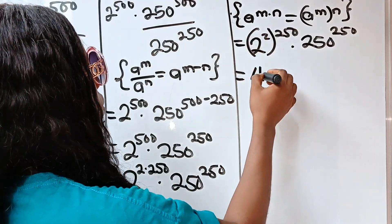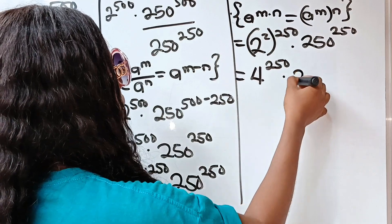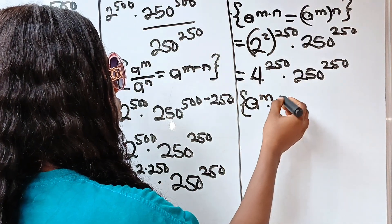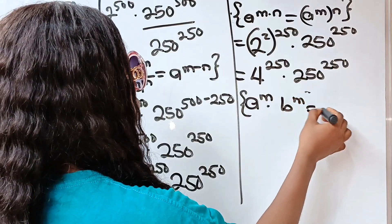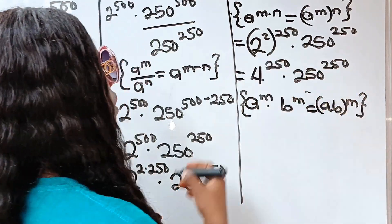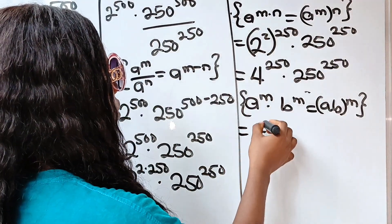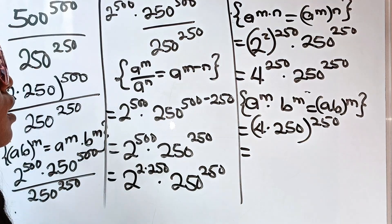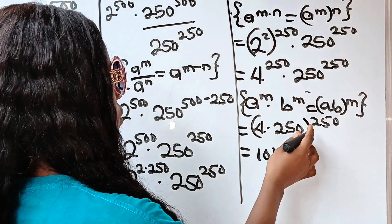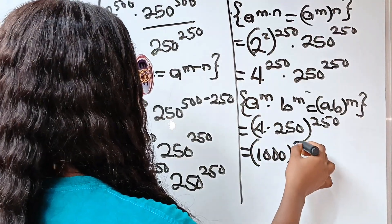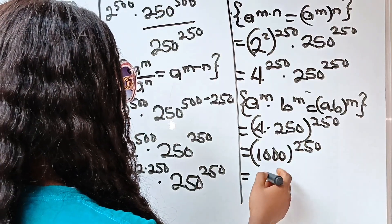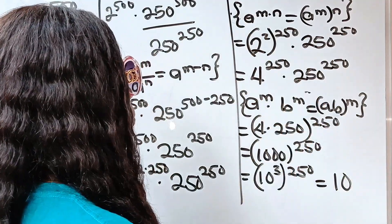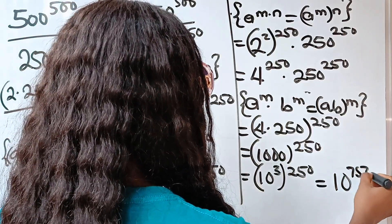Here we have (2^2)^250, which is 4 raised to the power of 250, multiplied by 250 raised to the power of 250. Now, 4 times 250 is 1,000 — so that gives us 1,000 raised to the power of 250. But 1,000 is 10 to the power of 3, raised to the power of 250, which equals 10 to the power of 3 × 250, giving us 10 to the power of 750. And this is the answer.